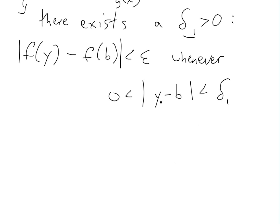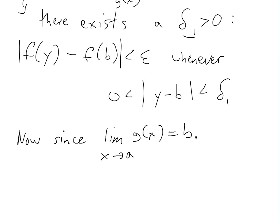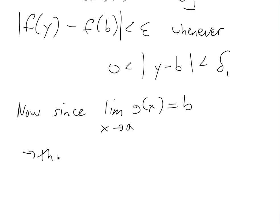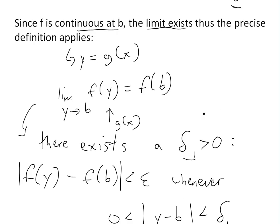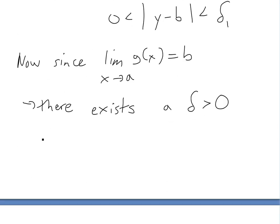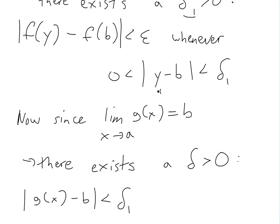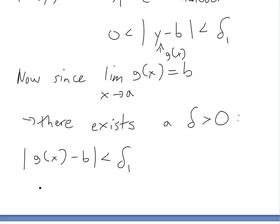So this condition exists. Now we can use the second given condition: the limit as x approaches a of g(x) equals b. Since this limit is given, the precise definition also applies, and there exists a delta greater than zero — the same delta we're trying to find — such that the absolute value of g(x) minus b is less than delta_1, whenever zero is less than the absolute value of x minus a and less than delta. Here g(x) plays the role of y, so the condition |y − b| < delta_1 is satisfied.